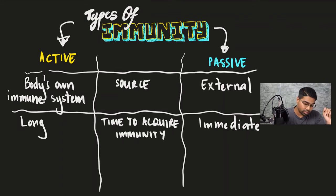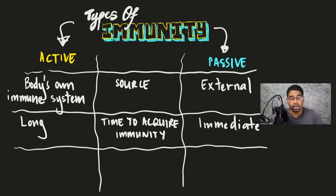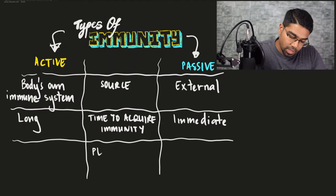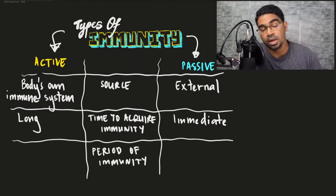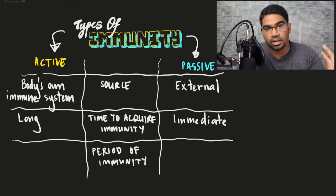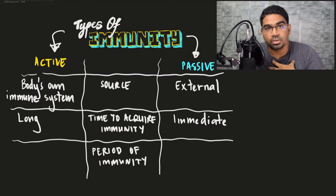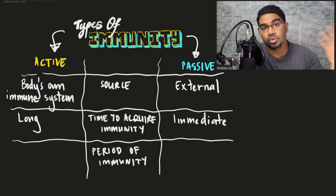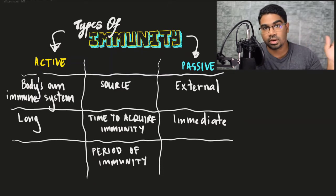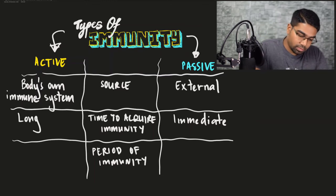The next point of difference is the period of immunity — do not confuse this with time to acquire immunity. This is how long the immunity is going to last. Since active immunity is when our own body produces the antibodies, it is going to last for a very long time. In some cases it lasts up to a lifetime — you only take the vaccine once and it is effective throughout your lifetime. In other cases it will last for several years.